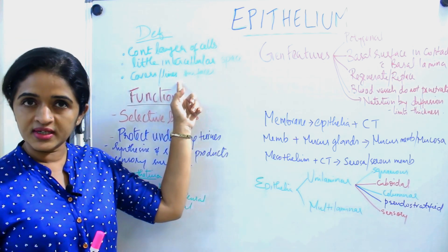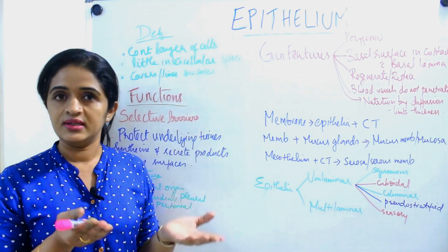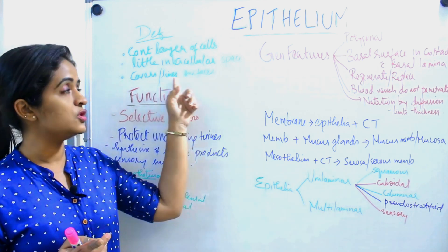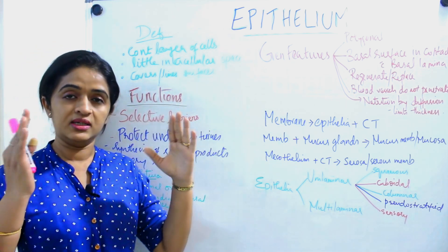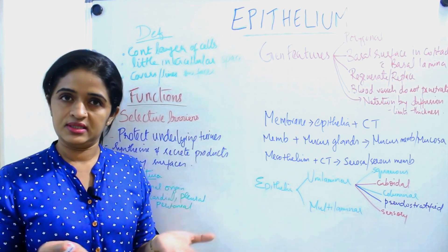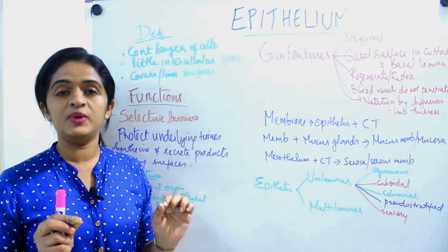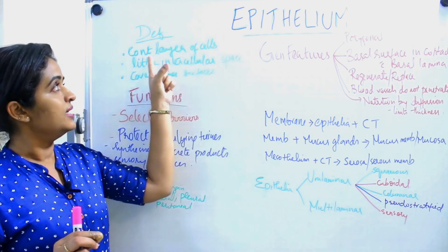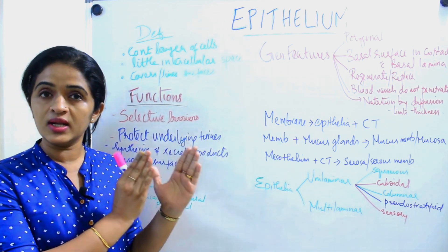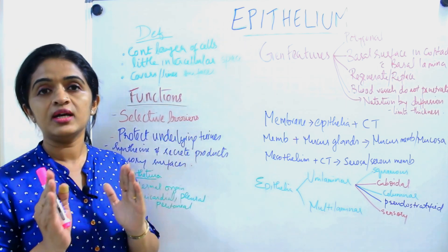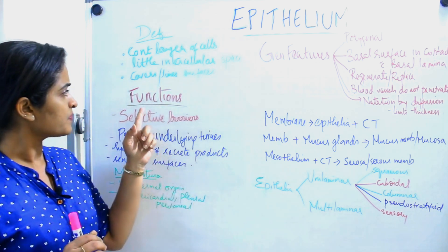The third point is that epithelium is usually covering some surfaces or it lines the cavities. So these are the two main regions where you get epithelium — it either covers surfaces or it lines cavities. So to summarize, the three important points in defining epithelium are: it is a continuous layer of cells, with little intercellular space, and it is usually covering the surfaces or lining the cavities.